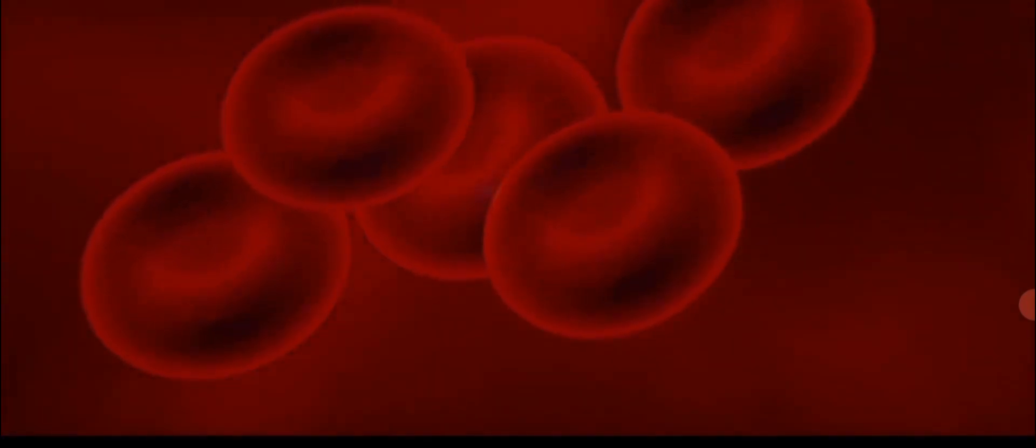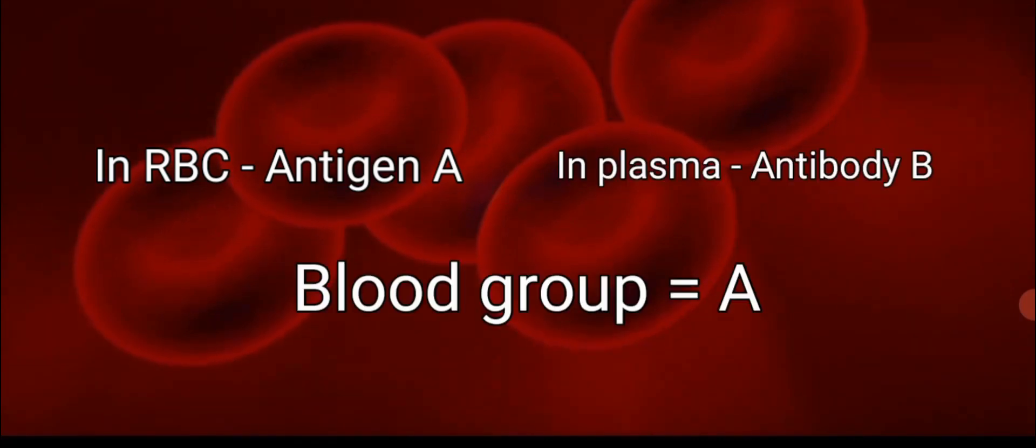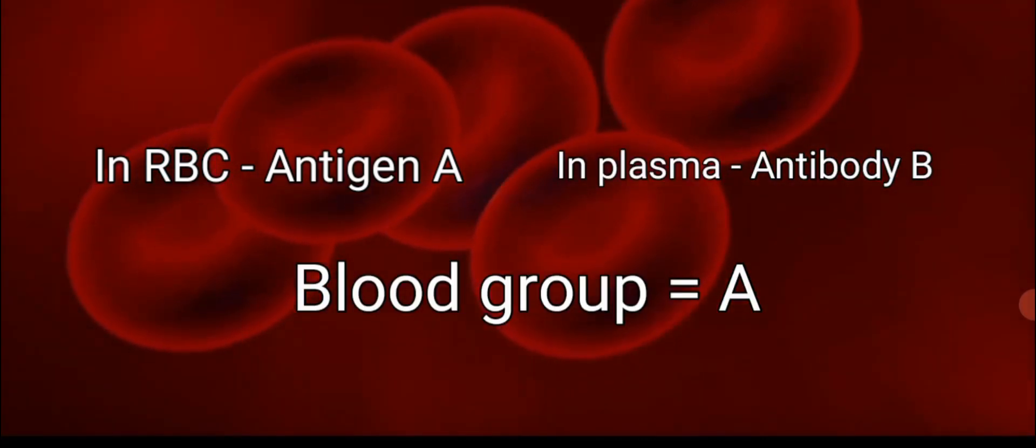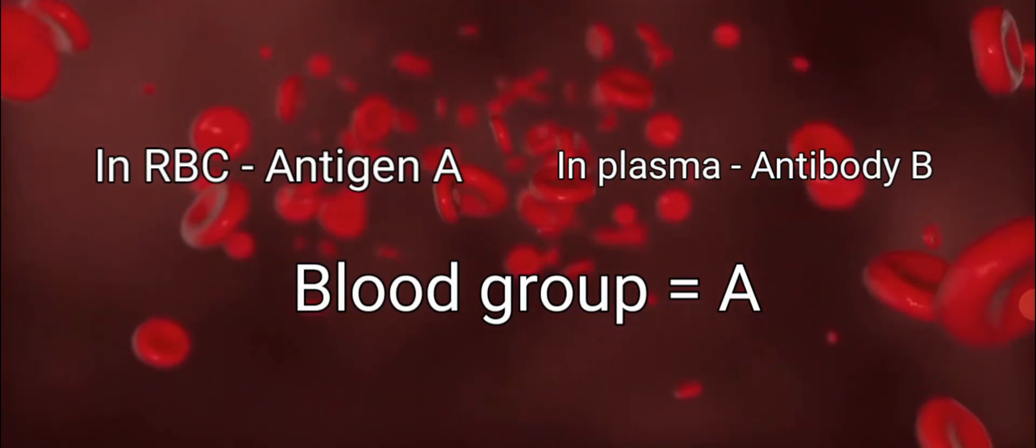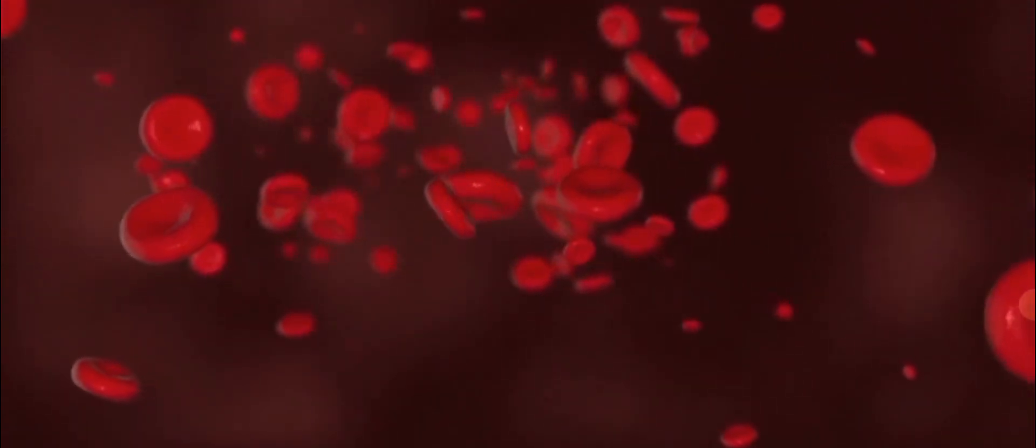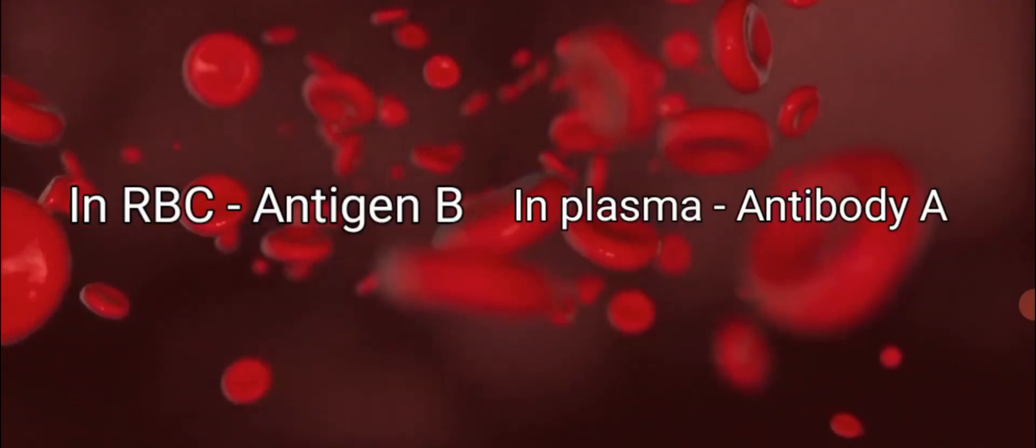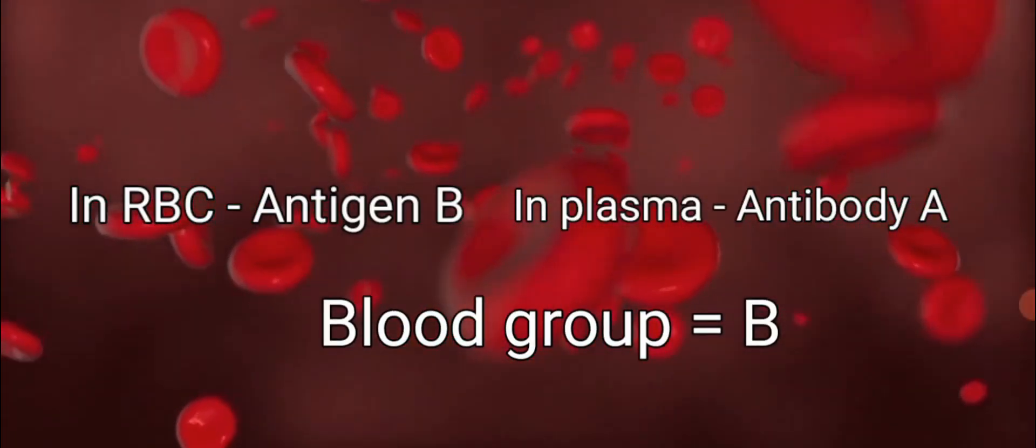If the antigen A is present on RBC and antibody B is present in plasma, then the blood group will be A. Similarly, if the antigen is B and antibody is A, then the blood group that will be formed will be B.